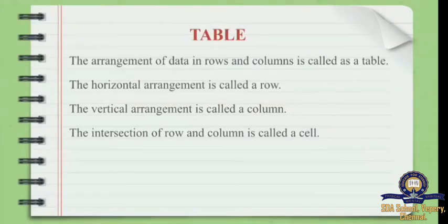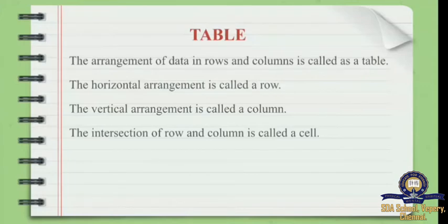What is a tabular column? What is a table? The arrangement of data in rows and columns is called a table. A tabular column has rows and columns, and we arrange data inside a tabular column using rows and columns.